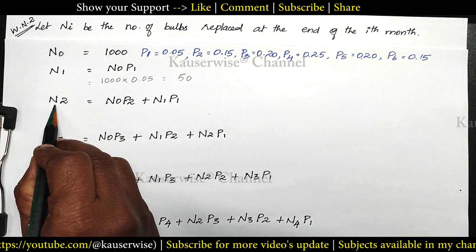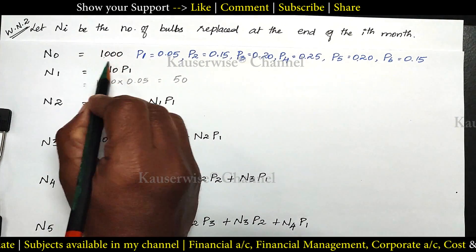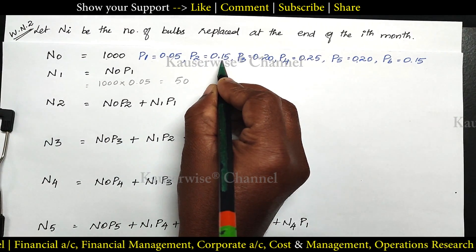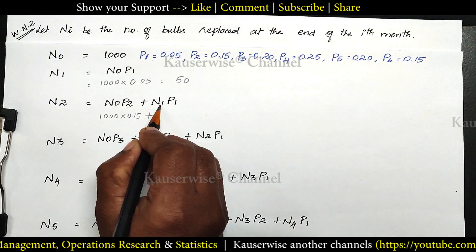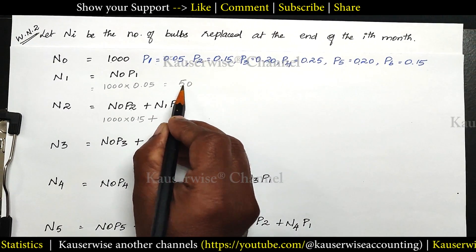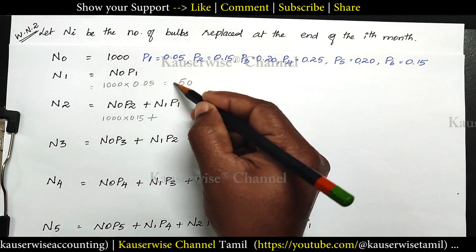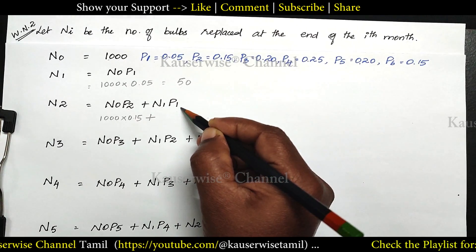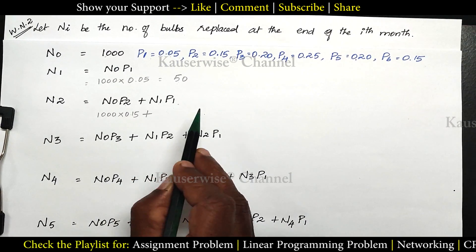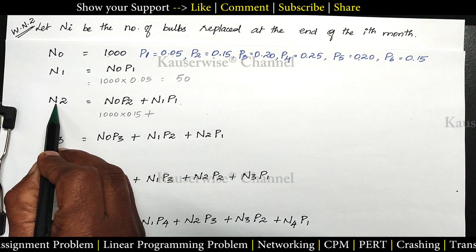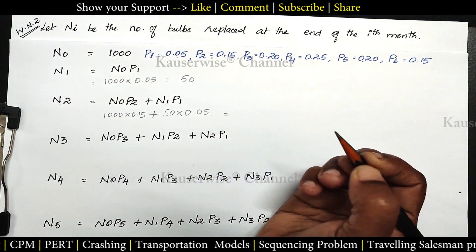At the end of the second month, N2: N0 × second month probability 0.15 = 1000 × 0.15 = 150, plus N1 — the previous month we replaced 50 bulbs. Those 50 bulbs are one month old at the second month end, so apply first month probability 0.05: 50 × 0.05 = 2.5. Total N2 = 153 bulbs. This is the total number of bulbs to replace at the end of the second month.